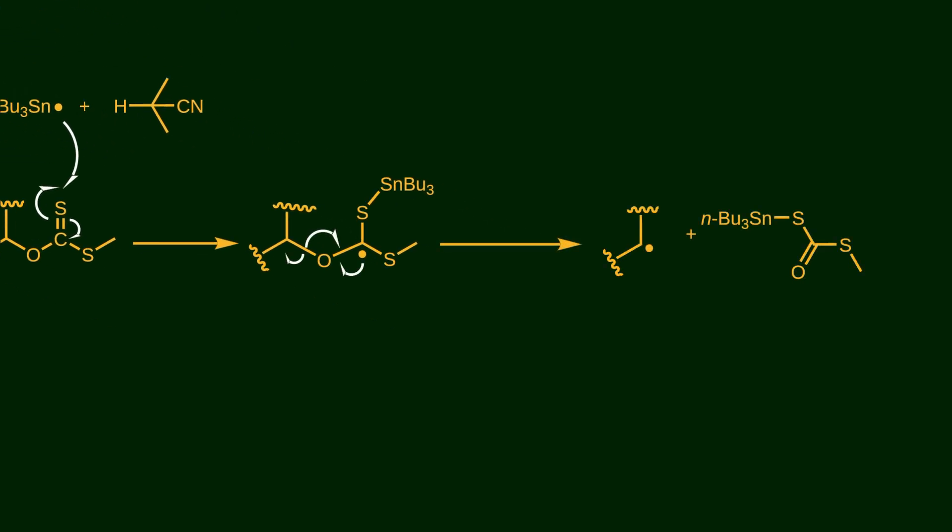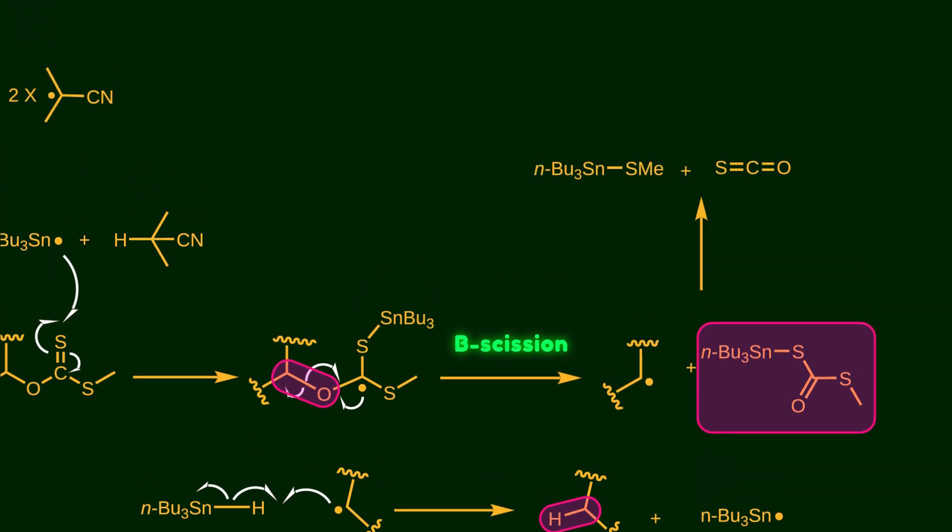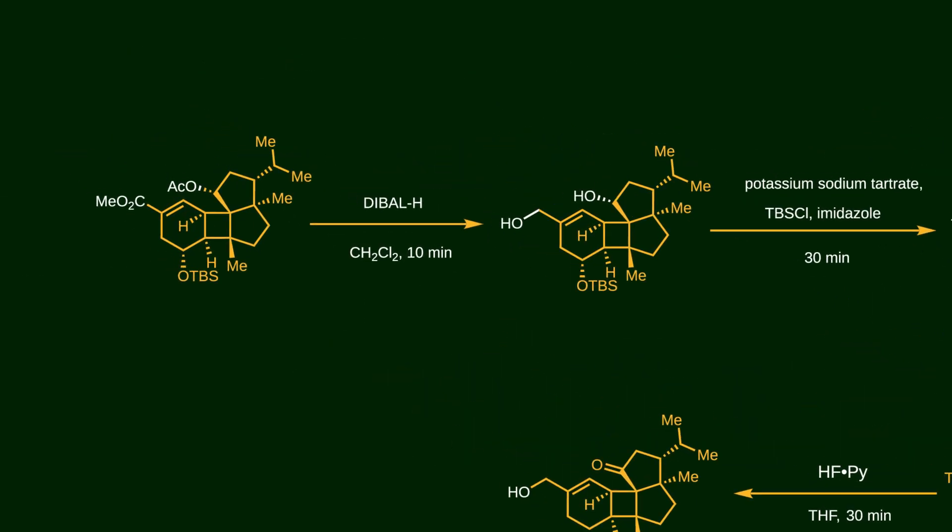This step is called beta scission because the bond at the beta position of the radical center is broken. Finally, the carbon radical attacks another tributyltin hydride, abstracts a proton, and regenerates the tin radical to continue the chain reaction. At this stage, the hydroxy group has been removed. The unstable thiocarbonate byproduct undergoes rearrangement to produce carbonyl sulfide gas, while the stable Sn-S bond provides a strong driving force for the overall reaction.